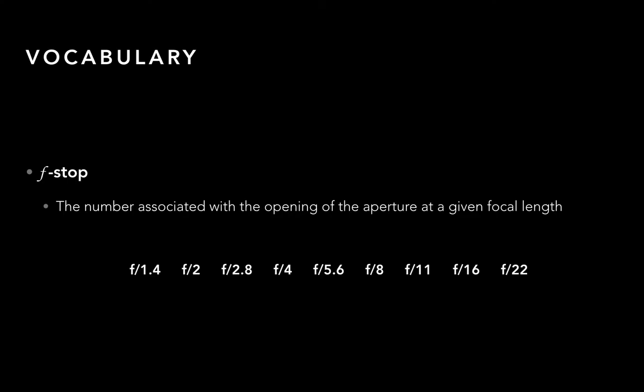Each of these are called stops, and f/1.4 is the largest — the largest opening, smallest number. Every time you change a full stop, you half the light that's coming in. So technically stopping down from f/1.4 to f/2 will actually cut the amount of light coming in by half.